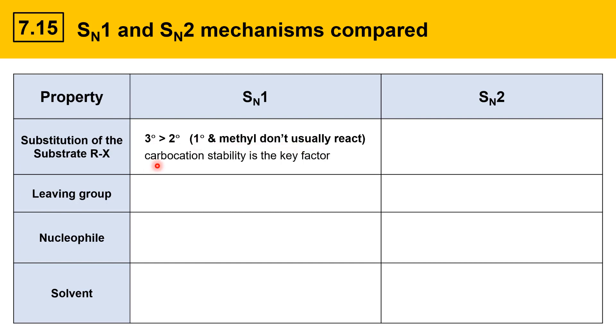The important thing here is that carbocation stability is the key factor. Tertiary carbocations are much more stable than secondary, which are much more stable than primary and methyl. For SN2 reactions, substitution also matters, but for different reasons.